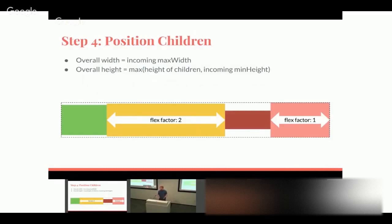Once we have sizes for all children, positioning is simple: go through in order, place the first at position zero, increment by its width, and so on. For height, there are alignment choices — top, bottom, or center. The overall row height is the max of all children's heights. Notice we couldn't figure out position until we had all sizes, and once we had sizes we could position without touching the children again. In contrast to the web, a child's size cannot depend on its position because it doesn't even know its position.